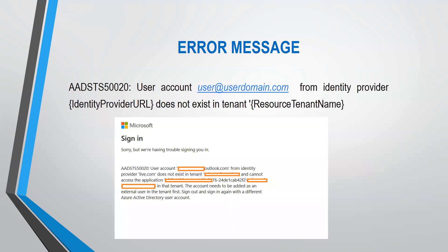Let's jump straight to what this error message looks like. On our screen: 'User account at outlook.com from identity provider live.com does not exist in tenant and cannot access the application.' Azure pulls out the application ID for you, as you can see on the screen. Azure also suggests that you need to add the user as a guest user or external user in the tenant where the application is hosted.